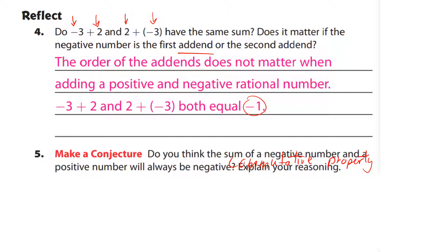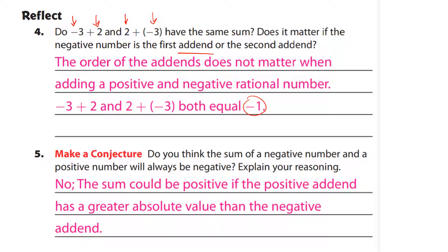Make a conjecture: do you think the sum of a negative number and a positive number will always be negative? No — the sum could be positive or negative depending on which addend has the greater absolute value. For example, three plus negative four equals negative one, but four plus negative three equals positive one. It depends on which addend has the larger absolute value.